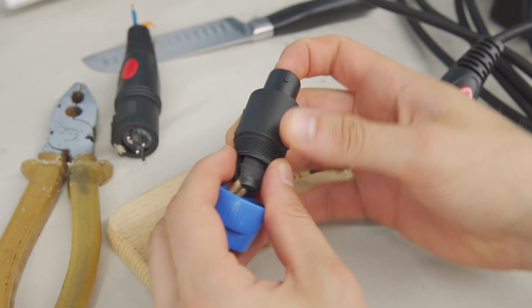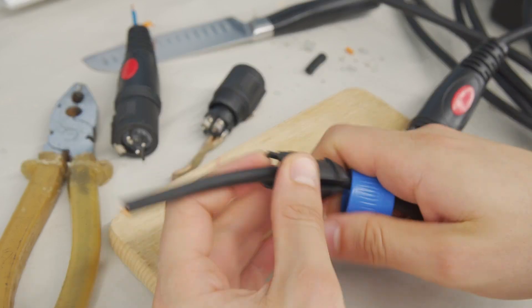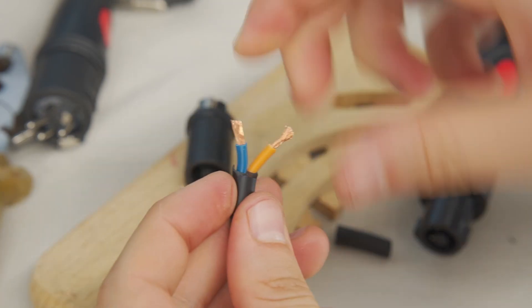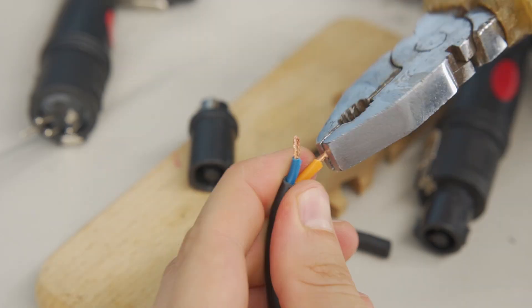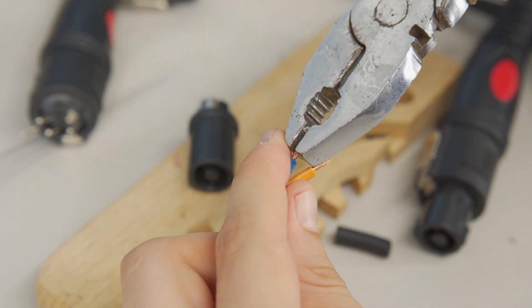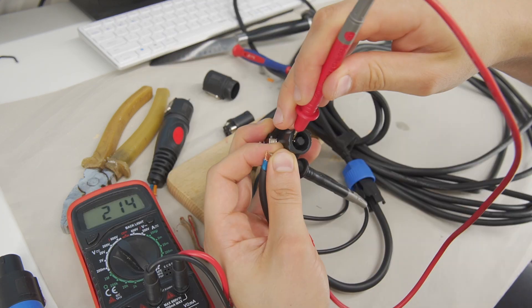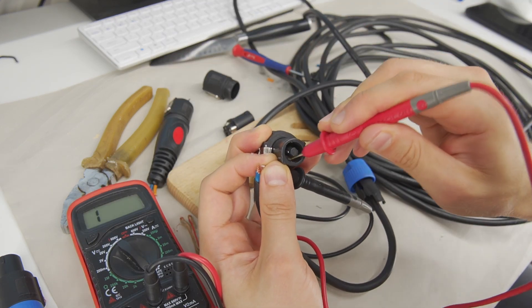Disassemble the SpeakOn connector and put the necessary parts onto the cable. Carefully remove the cable jacket as needed, twist the copper strands, and strengthen the twist with pliers. Use a multimeter in resistance mode to check which wire corresponds to positive and which to negative contact.